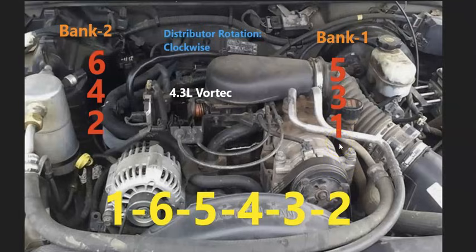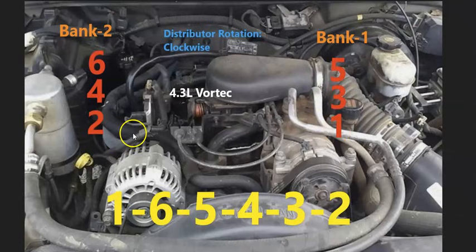The cylinder location, starting with the driver's side looking at the front of the engine, is going to be 1, 3, 5. And on the passenger side, it's going to be 2, 4, 6.